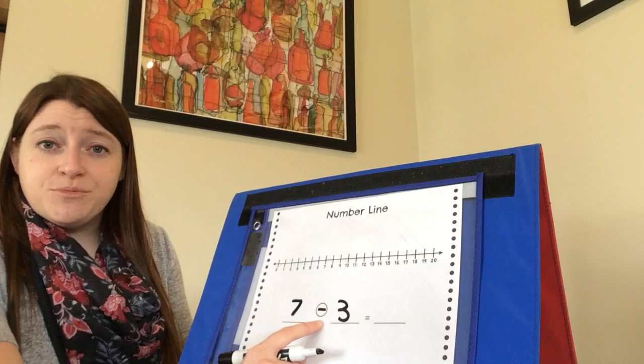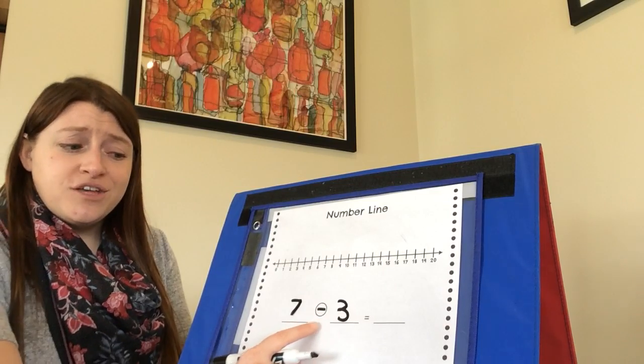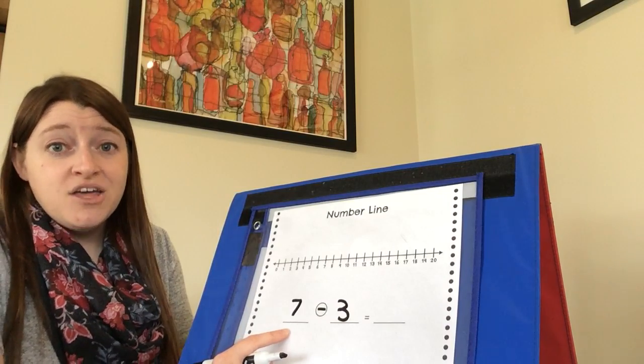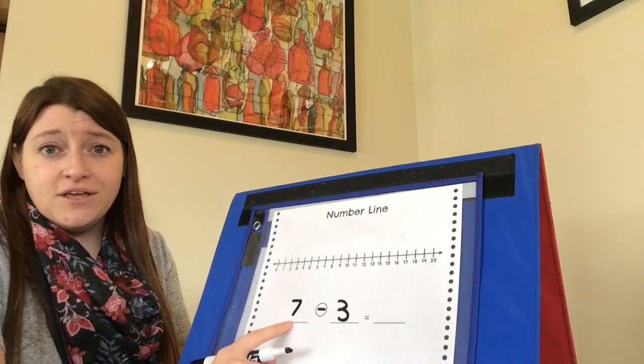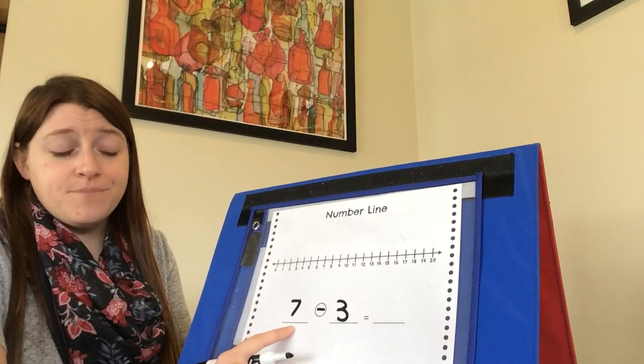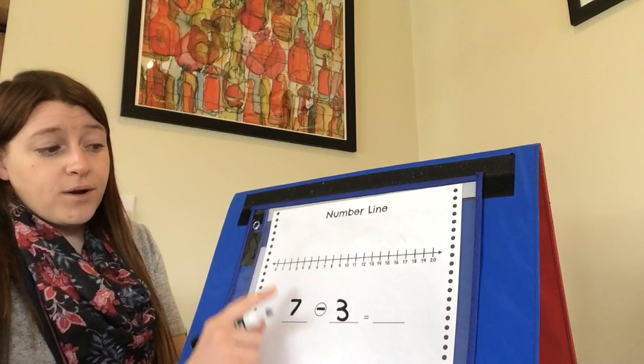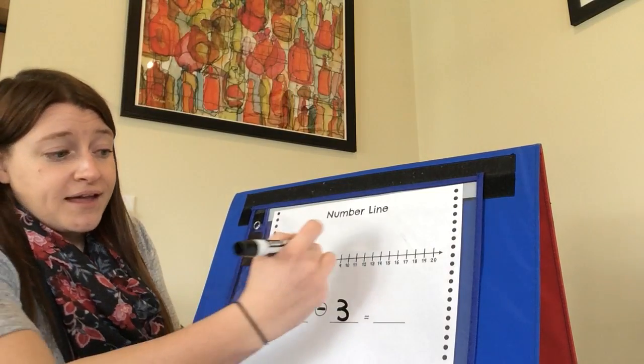When we were solving addition problems on the number line, I told you that you could start with either number for where you put your dot. In subtraction you can't do that. You always have to start by putting your dot on the first number. In this problem the first number is seven, so we're going to find the number seven on our number line and put a dot there.